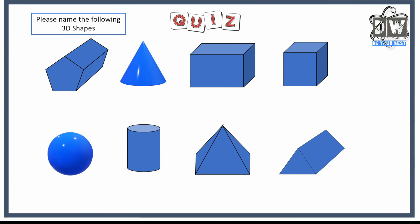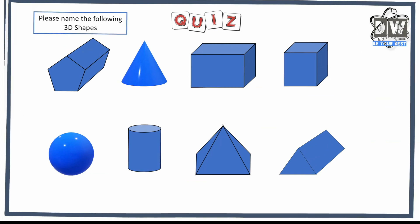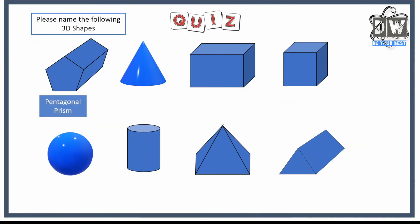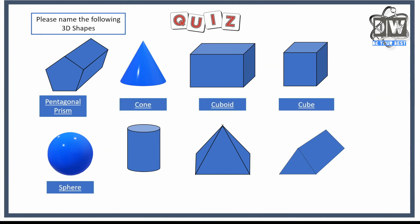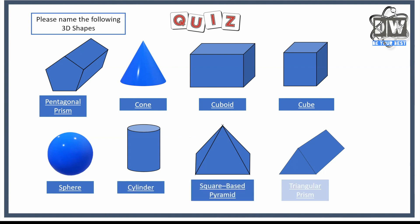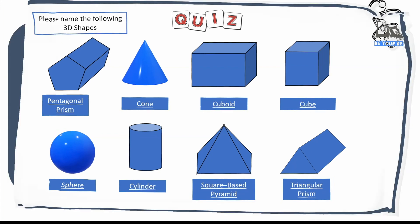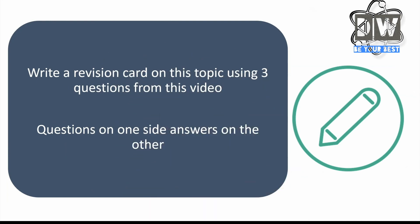Here's the quiz — copy out the shapes and name them, then come back and see if you got them right. Here are all the names: pentagonal prism, cone, cuboid, cube, sphere, cylinder, square-based pyramid, and last but not least, my favourite — triangular prism. And that is it, guys and girls.